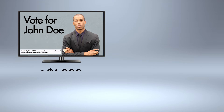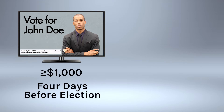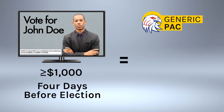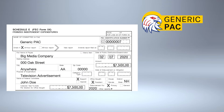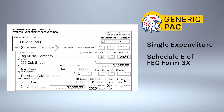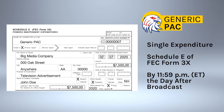Since the ad costs more than $1,000 and will run just four days before that election, Generic PAC must file a 24-hour report. Generic PAC must disclose its multi-state independent expenditure as a single expenditure on Schedule E of FEC Form 3X within 24 hours of the ad's broadcast.